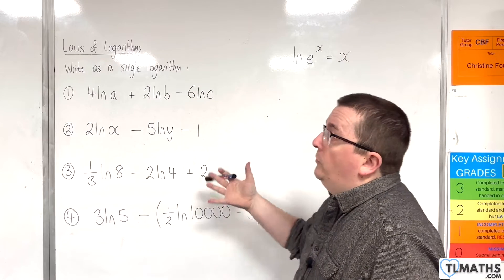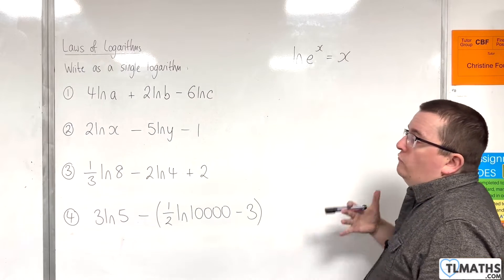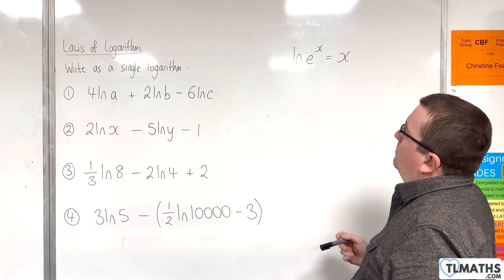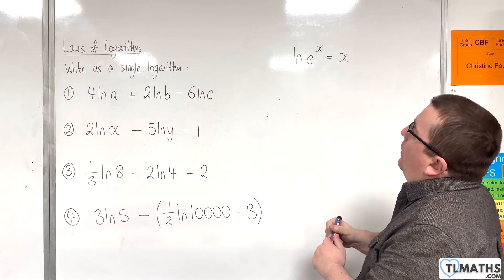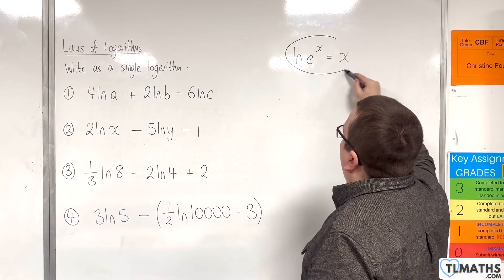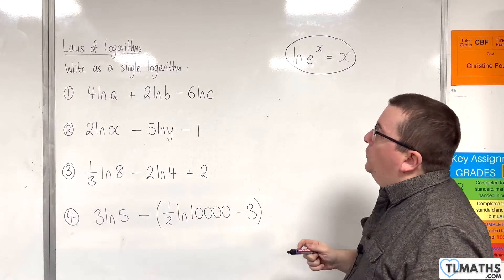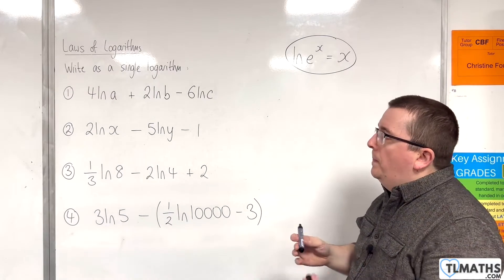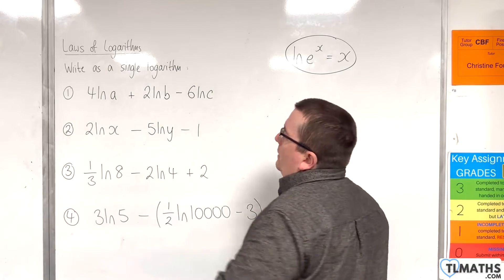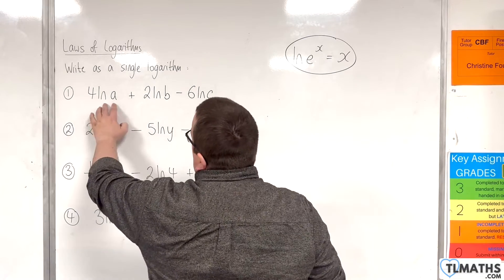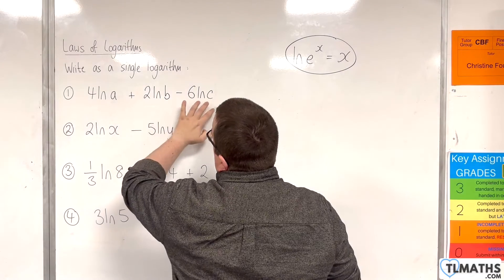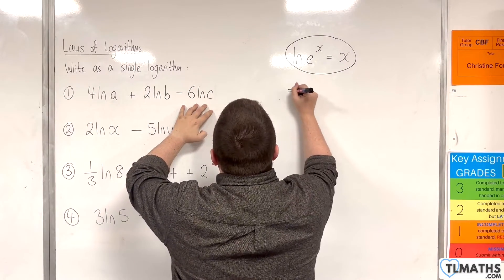In this video, we'll go through some examples of writing each of these as a single logarithm, utilising the rule that the natural log of e to the x is equal to x. For the first example, we have 4 times the natural log of a, plus 2 times the natural log of b, take away 6 times the natural log of c.